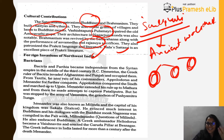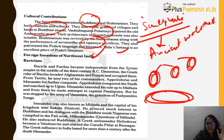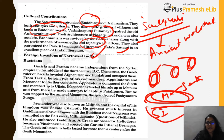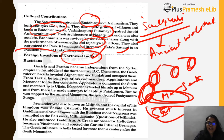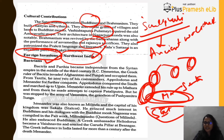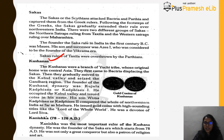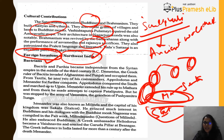While the Gangetic Valley had the Sungas and Kanvas, and the Deccan had the Satvahanas, northwest India was facing foreign invasions during this period. There were four major foreign invaders: the Bactrians, the Parthians, the Scythians (Sakas), and the Kushanas.